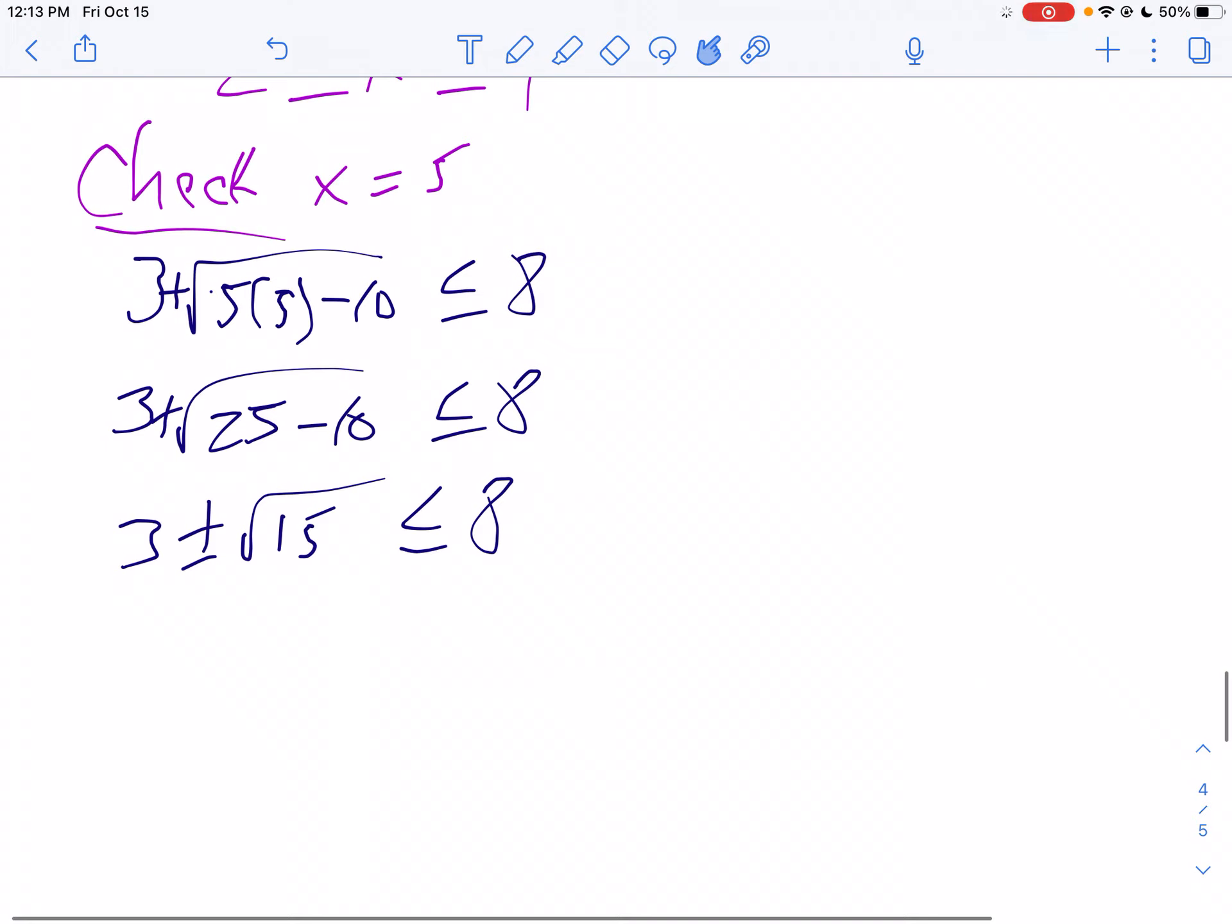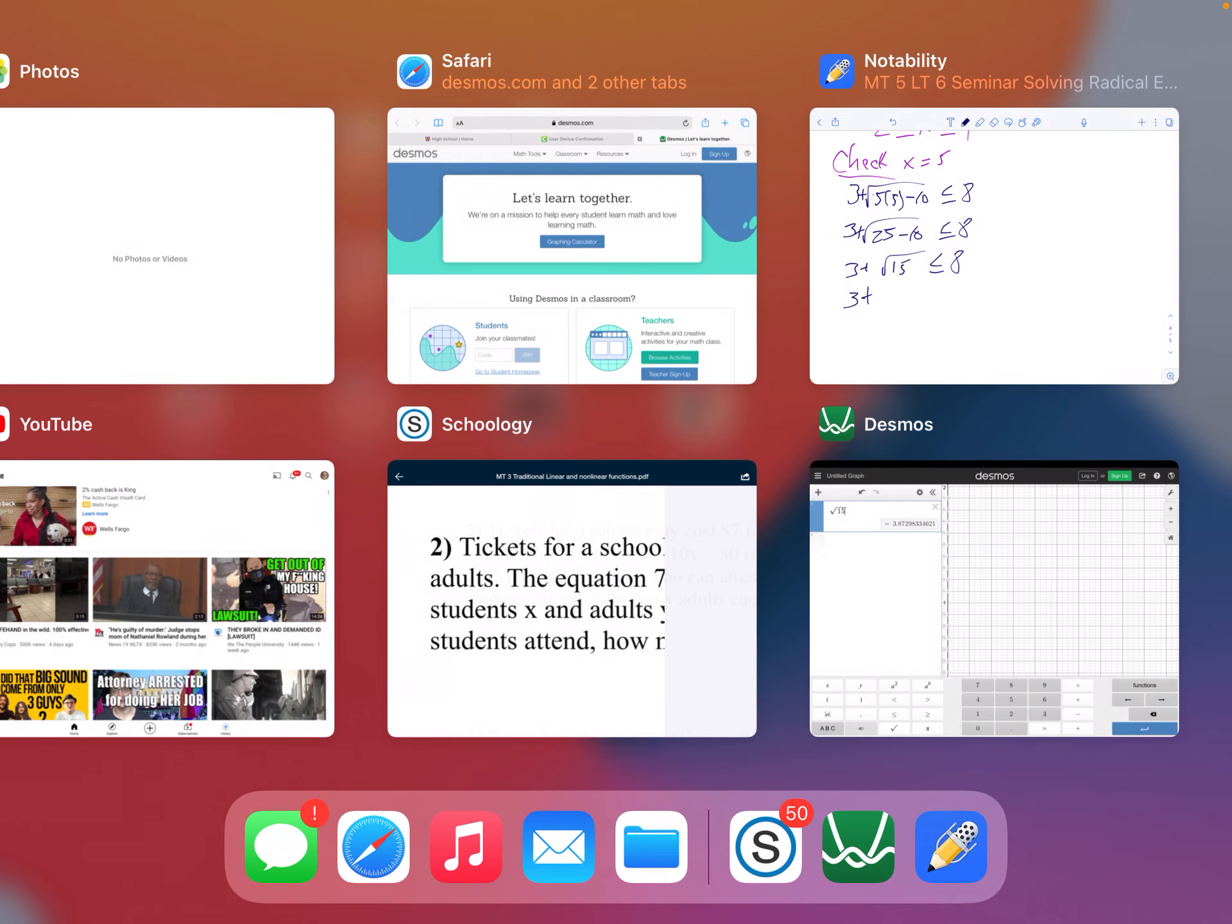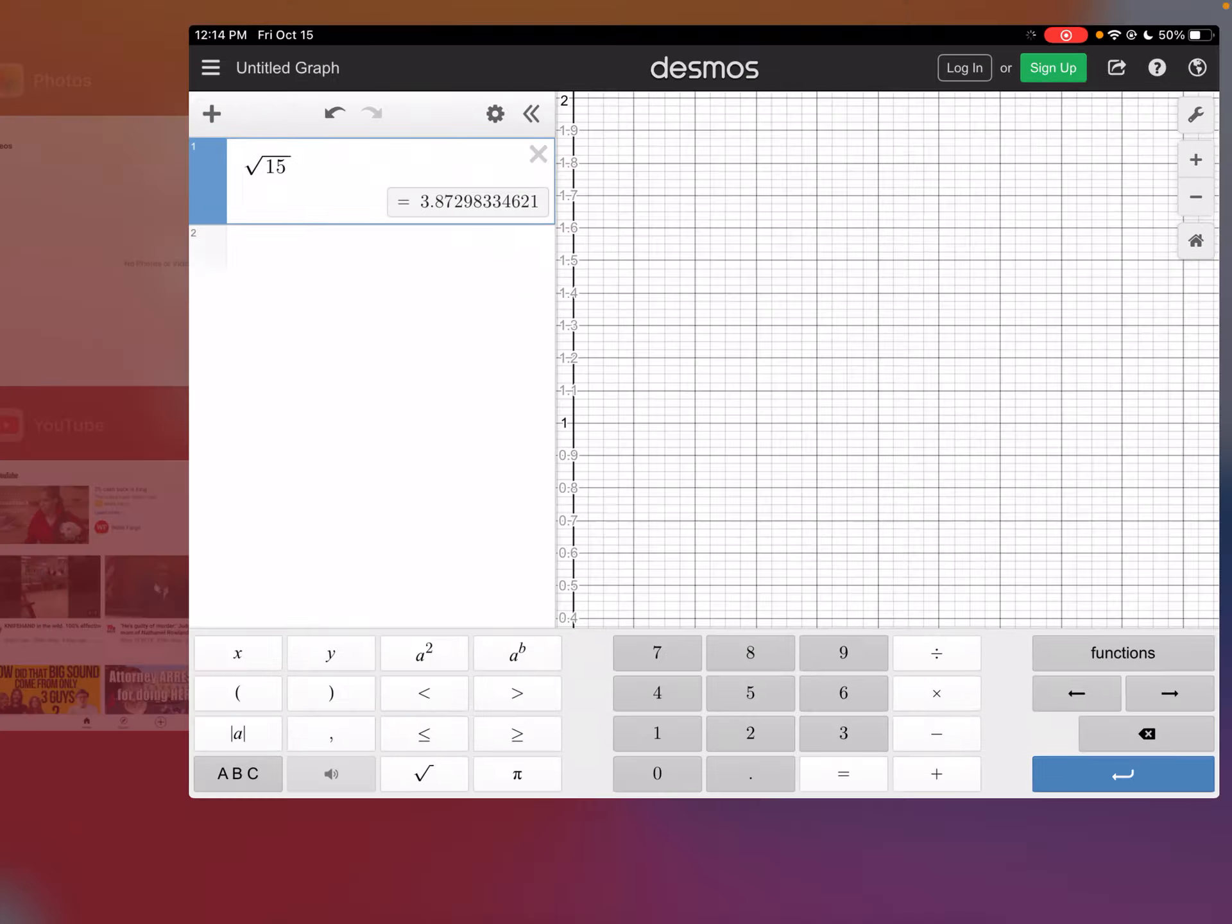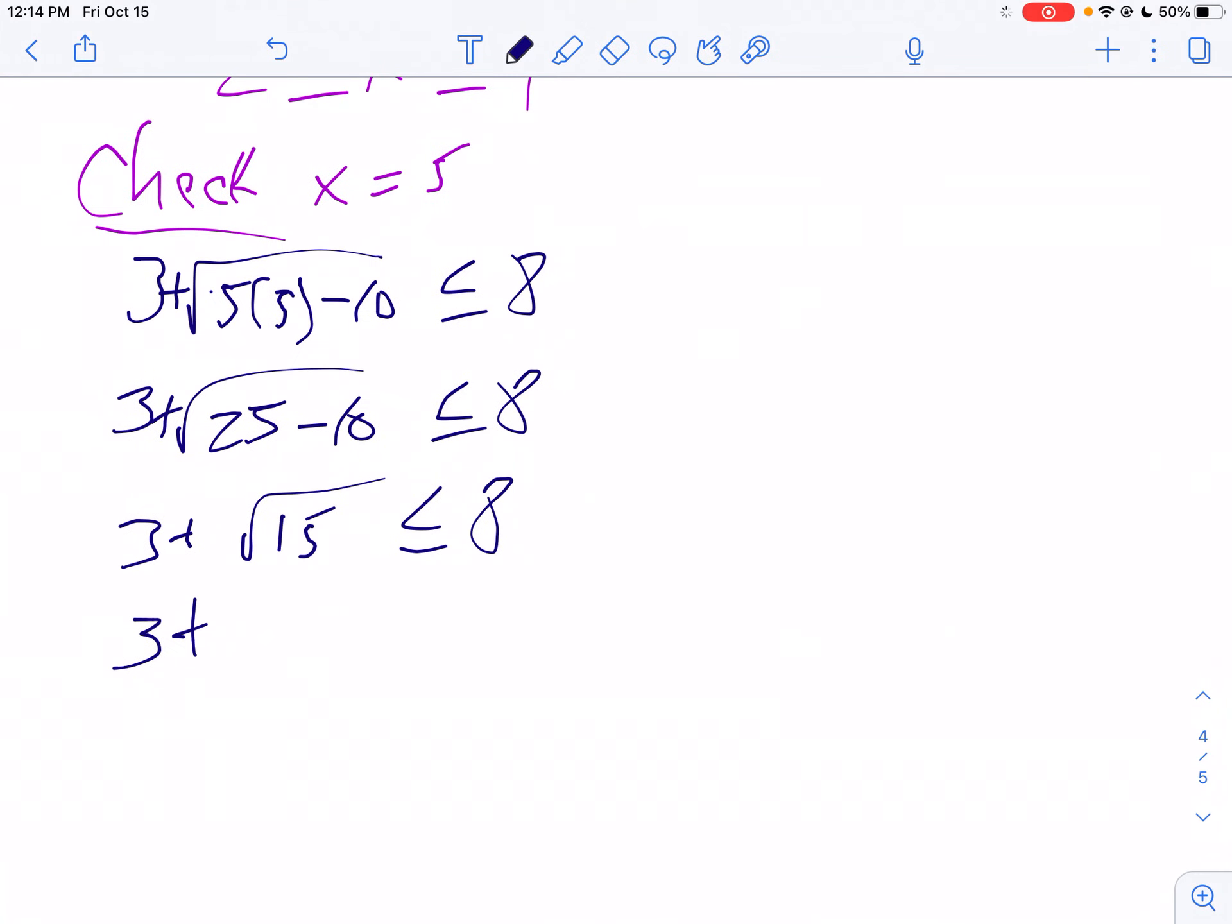So 3 plus 3.88, that's less than or equal to 8. So 6.88 is less than or equal to 8. It checks.